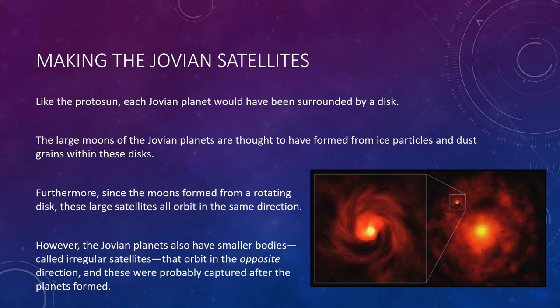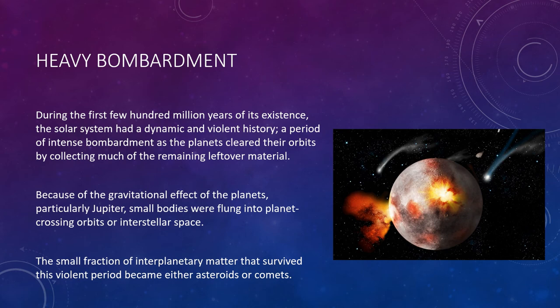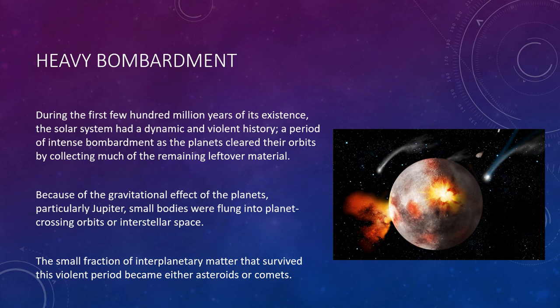During the first few hundred million years of its existence, the solar system had a dynamic and violent history—a period of intense bombardment as the planets cleared their orbits by collecting much of the remaining leftover material. The scars of this period are still evident on the moon's surface today. Because of the gravitational effects of the planets, particularly Jupiter, small bodies were flung into planet-crossing orbits or interstellar space. The small fraction that survived became either asteroids or comets, the latter residing mainly in the outer reaches of the solar system.